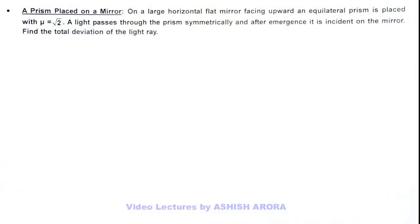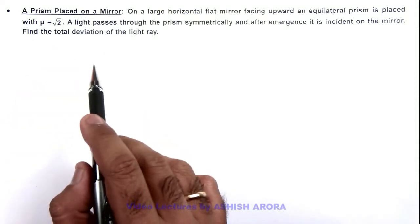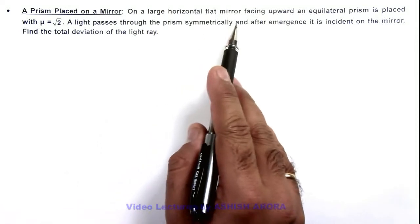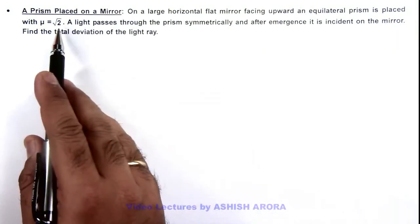In this illustration we'll analyze a situation in which a prism is placed on a mirror. We are given that on a large horizontal flat mirror facing upward, an equilateral prism is placed with mu equal to root 2.